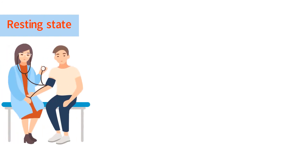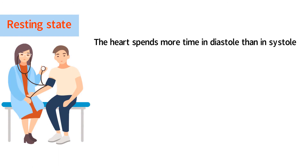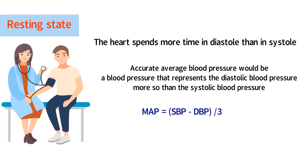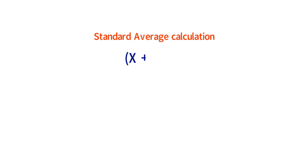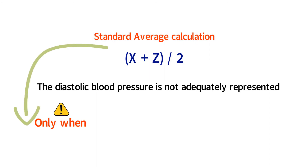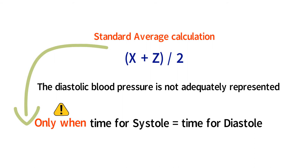When a person is in a resting state, such as sitting during a blood pressure reading, the heart spends more time in diastole than in systole. Therefore, an accurate average blood pressure would represent the diastolic blood pressure more so than the systolic blood pressure. For this reason, the formula for mean arterial pressure calculates a mean closer to the diastolic blood pressure. In the case of the standard average calculation — where two numbers are added and divided by two — the diastolic blood pressure is not adequately represented. This formula would only work if the heart spent exactly the same amount of time in diastole as in systole.